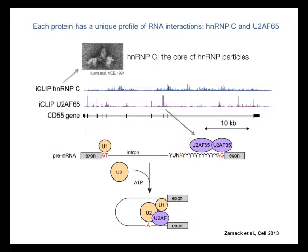These are particles that can actually be seen with electron microscopy studies if we purify RNA from the nuclei. On the other hand, we studied U2AF65, the first component that binds to the three-prime splice site upstream of each exon, and recruits the U2 snRNP, the component of the spliceosome, and thereby initiates the splicing reaction.